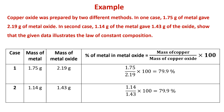For the second case, the percent of metal in the metal oxide equals 1.14 divided by 1.43, multiplied by 100. This also gives 79.9%. Thus, the copper oxide prepared by both methods contains copper in the same proportion by mass. This proves the law of constant composition.